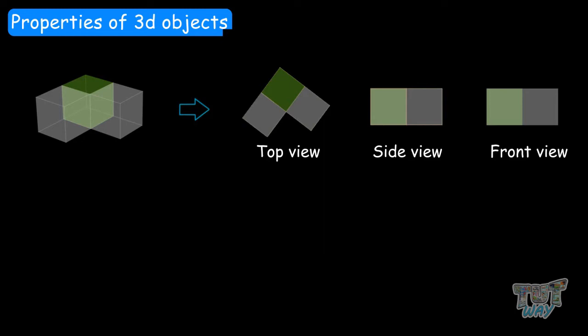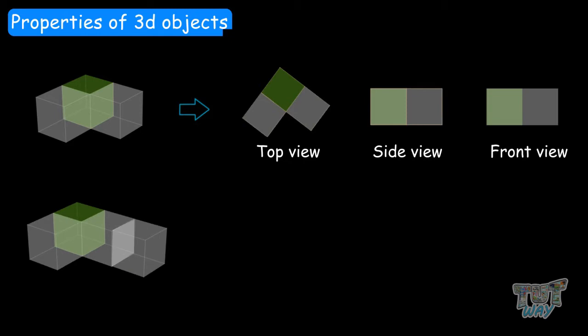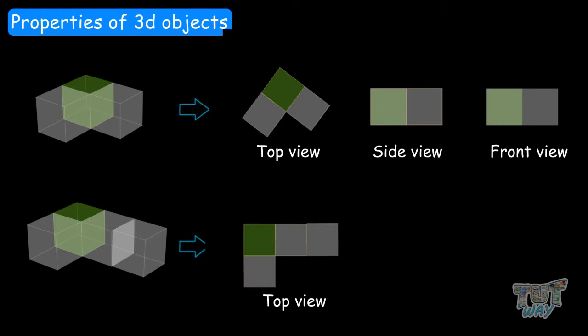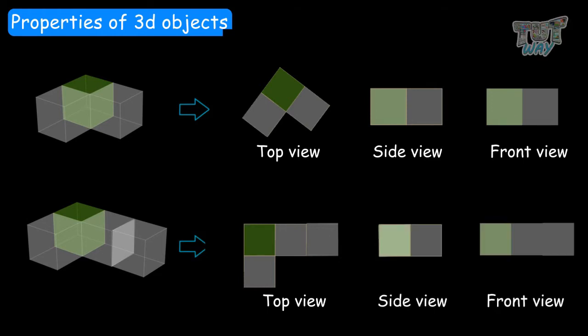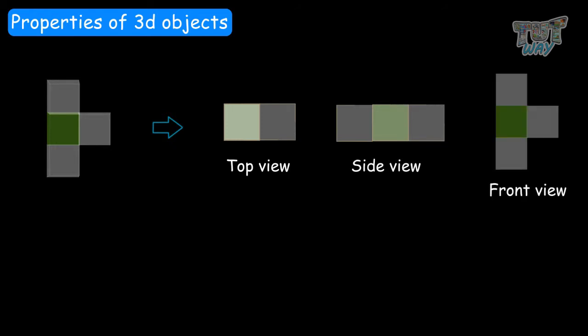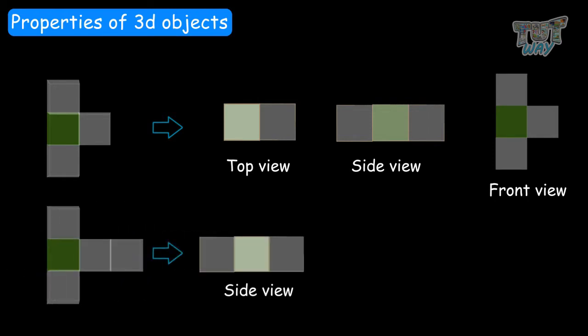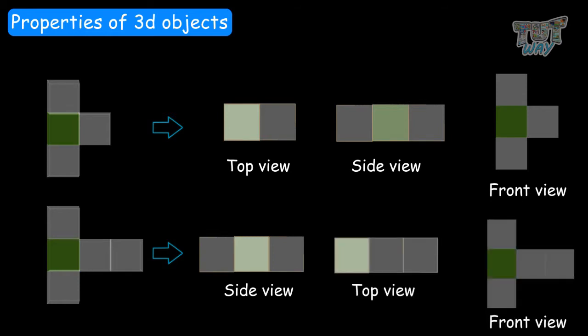This object is made up of 4 cubes. Let's have a look at its different views: this is its top view, this is its side view, and this is the front view. This other object is also made up of 4 cubes; this time the top view, side view, and front view are separate. Now, this one is made up of 5 cubes — this is its side view, top view, and front view. So 3D objects all have different views.